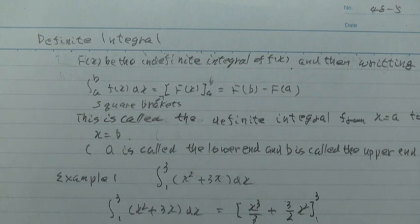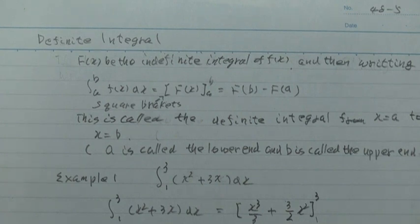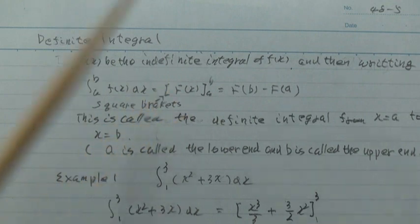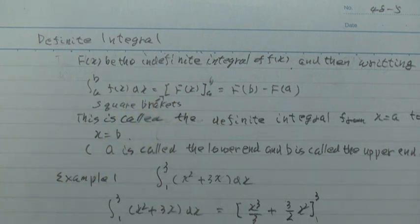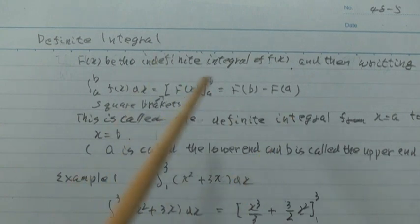This is called the definite integral from x equals a to x equals b. A is called the lower end and b is called the upper end.